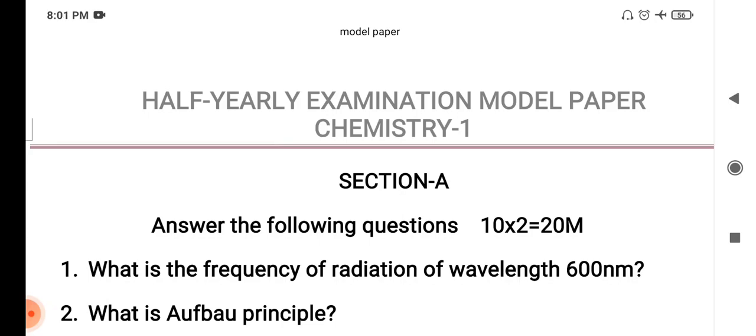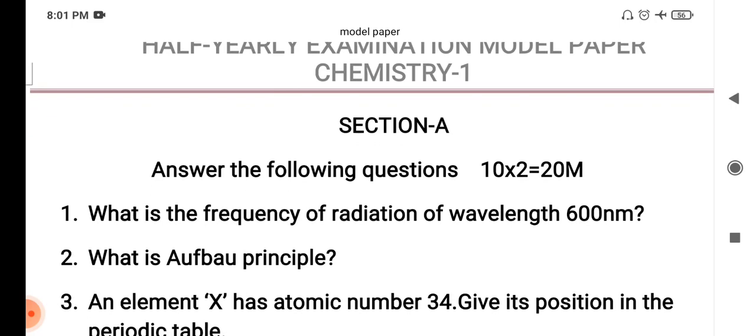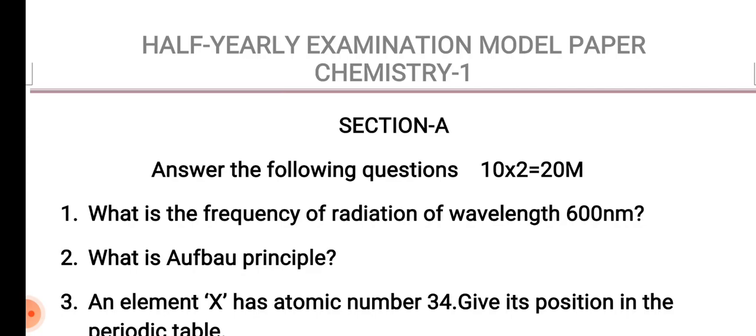Section A has 10 questions. Each question carries 2 marks. That means 10 into 2 equals 20 marks.